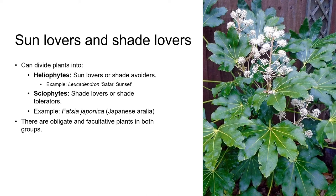In both these groups, the sun lovers and the shade lovers, there are obligate and facultative plants. Obligate shade lovers and obligate sun lovers absolutely have to be grown in either shade or sun respectively in order to survive. Facultative sun lovers are able to tolerate some level of shade, and facultative shade lovers are able to tolerate some direct sun, though they may not necessarily perform at their optimum.